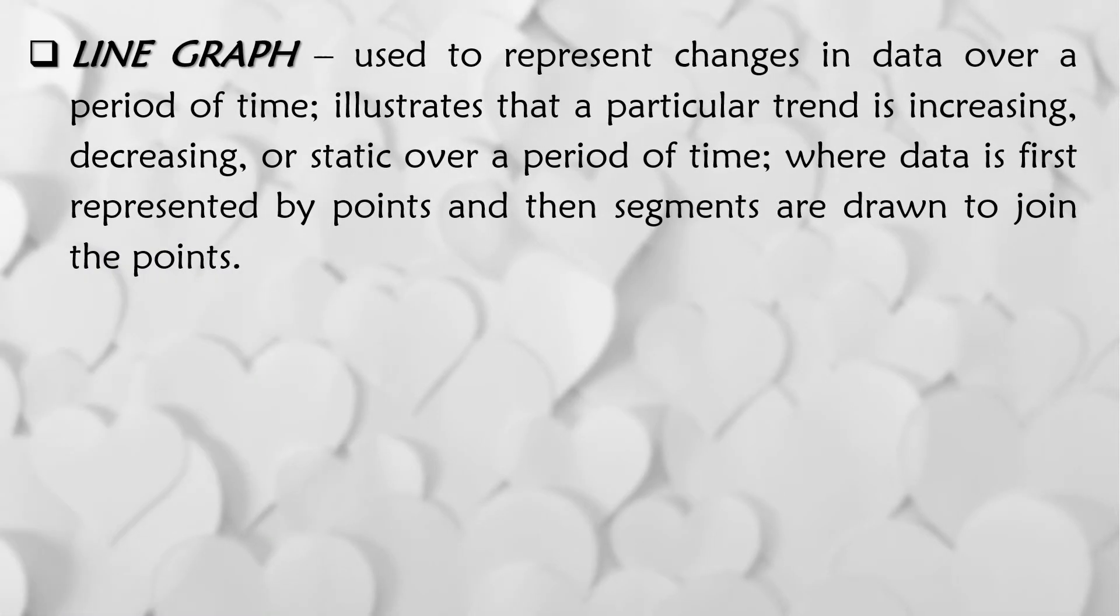Second type of graph is the line graph from the word itself, line. It is used to represent changes in data over a period of time. It illustrates that a particular trend is increasing or tumataas, decreasing or bumababa, or static over a period of time where data is first represented by points and then segments are drawn to join the points.